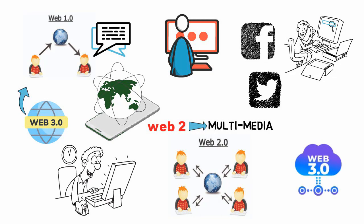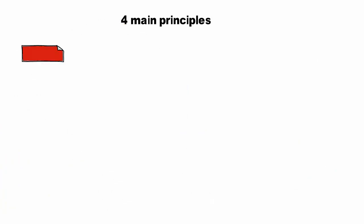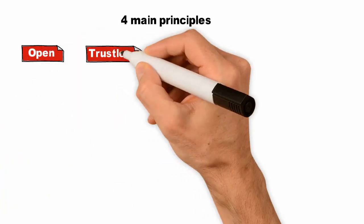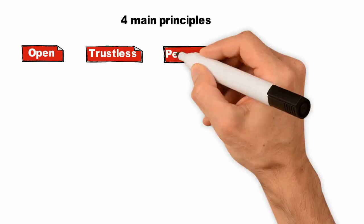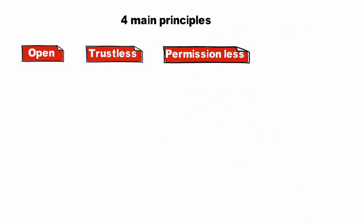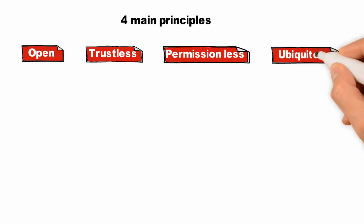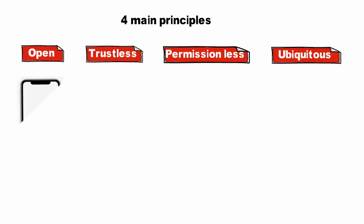Web 3.0 is still a work in progress, however it is expected to be implemented with four main principles: open, meaning it's open source and in full view of the public; trustless, meaning interacting without an intermediary; permissionless, meaning anyone can engage without permission from controlling organizations; and ubiquitous, meaning internet for all.